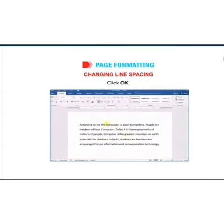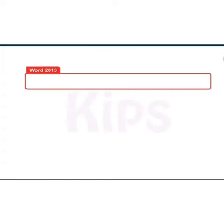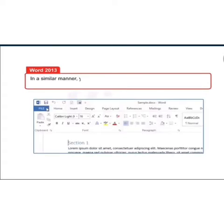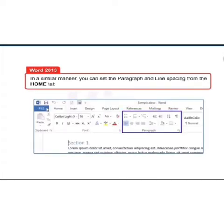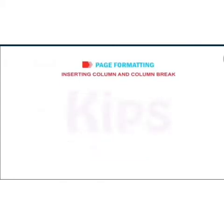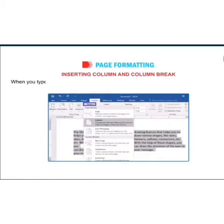Click OK and it will be applied to the paragraph. In Word 2016, it is similar — you can set the paragraph and line spacing from the Home tab as well.